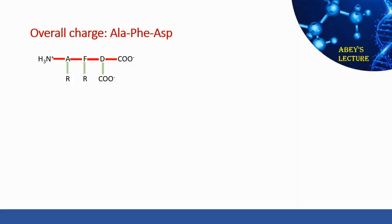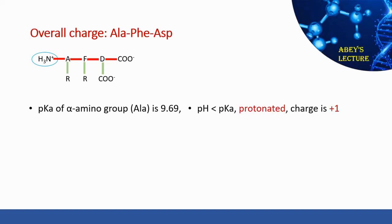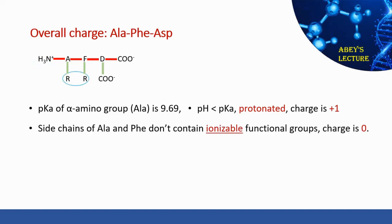From the pKa table, the pKa for the alpha amino group of alanine is 9.69. The pH of our solution is 1.3. Since the pH is smaller than the pKa, this amino group stays protonated, giving it a charge of +1. The side chains of alanine and phenylalanine don't contain ionizable functional groups, so their charge contribution is zero.